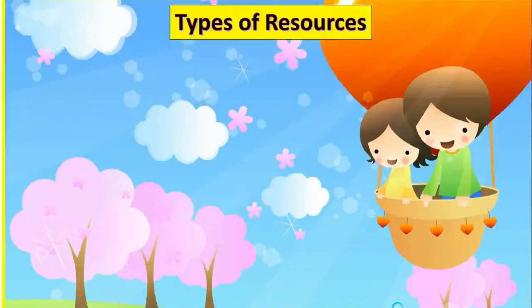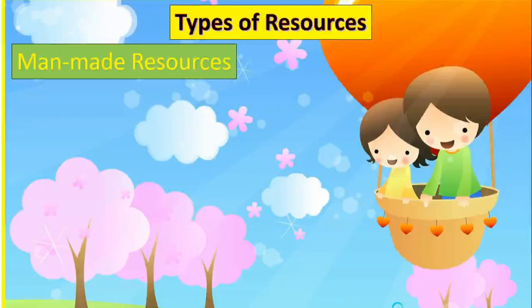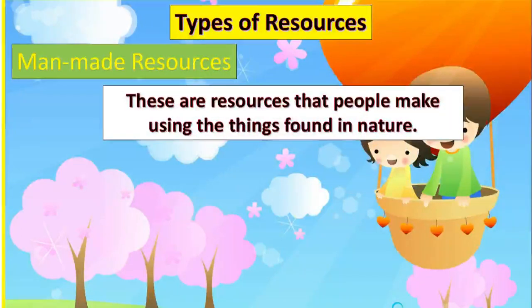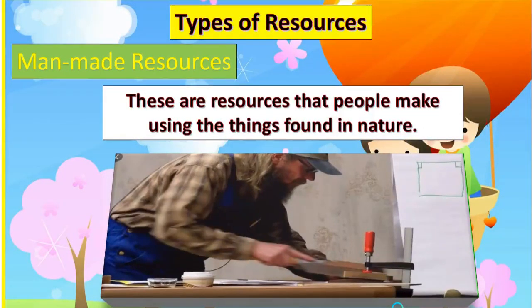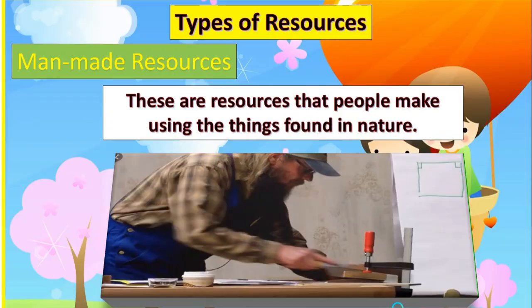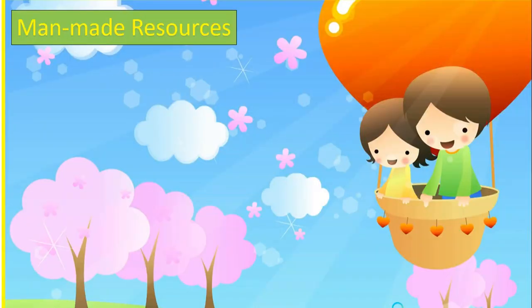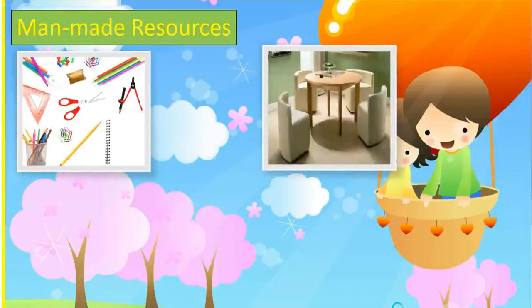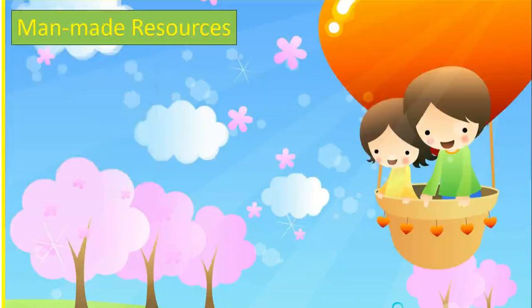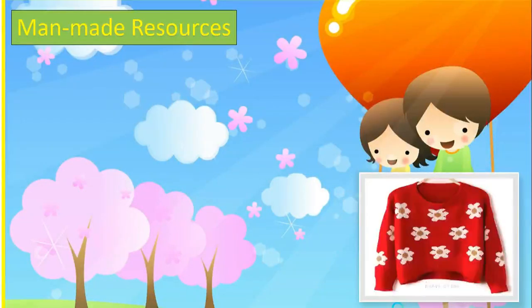How about man-made resources? These are the resources that people make using the things found in nature. For example, we do not make trees, but we use the wood of trees to make paper and furniture. We do not wear sheep wool, but we use the wool to make sweaters.